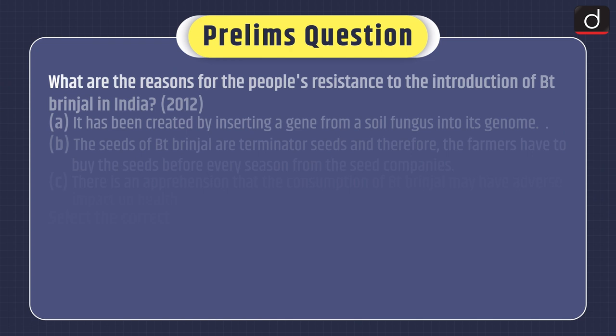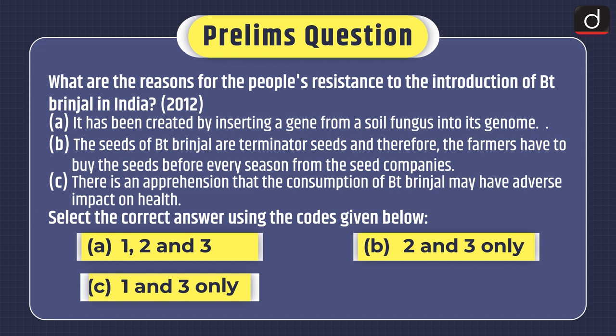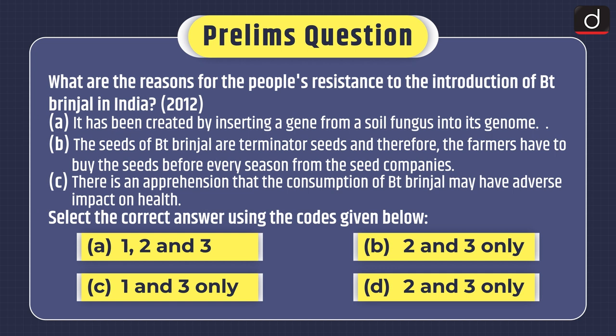Now it's time for practice questions. First, a prelims question that was asked in 2012: What are the reasons for the people's resistance to the introduction of Bt Brinjal in India? 1. It has been created by inserting a gene from a soil fungus into its genome. 2. The seeds of Bt Brinjal are terminator seeds and therefore farmers have to buy seeds before every season from seed companies. 3. There is an apprehension that the consumption of Bt Brinjal may have an adverse impact on health.